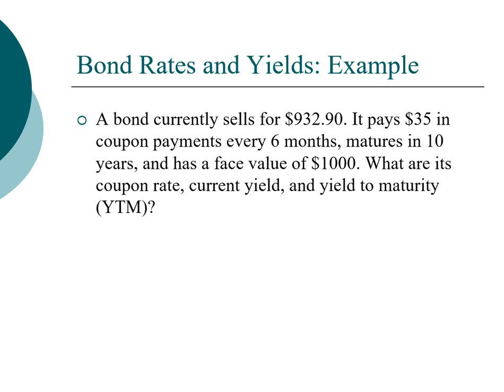So here we have a bond with pricing information. The price of the bond today is currently selling at $932.90. It pays $35 in coupon payments every six months, so this is a semi-annual bond. It matures in 10 years and has a face value of $1,000.